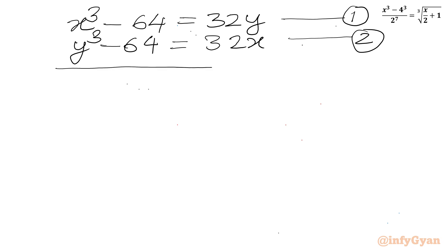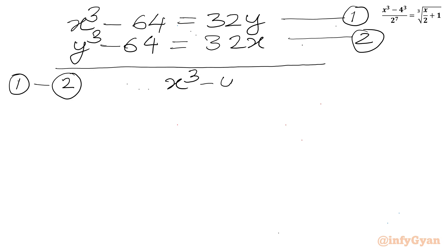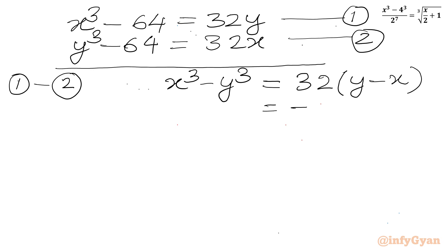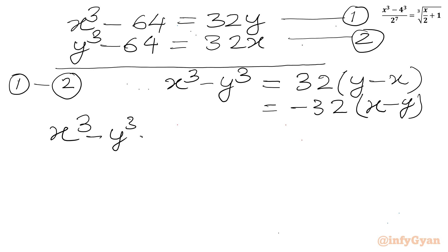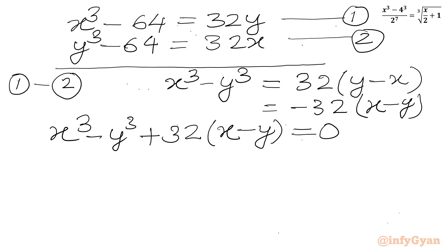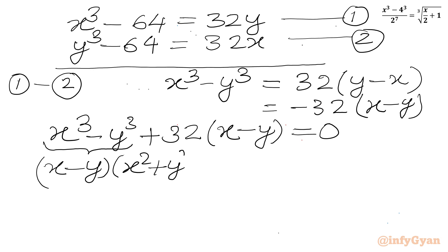Now I will perform the operation: equation 1 minus equation 2. We will get x cubed minus y cubed on the LHS. The minus 64 terms cancel out. On the RHS we get 32y minus 32x, which is minus 32 times (x minus y). Taking all terms to the LHS: x cubed minus y cubed plus 32 times (x minus y) equals 0. Now we can apply the difference of two cubes formula: a cubed minus b cubed equals (a minus b)(a squared plus b squared plus ab).